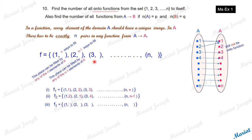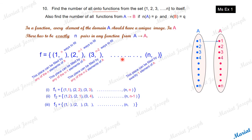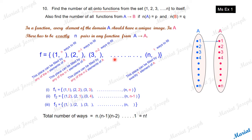Likewise, for the third element, two images are already used, so we are left with n−2 options. It keeps reducing. The last pair has exactly one option — the one remaining element. So filling up these n pairs takes n ways, then n−1, then n−2, and so on down to 1. By the multiplication principle, the total number of arrangements is n × (n−1) × (n−2) × ... × 1, which is n factorial. Therefore, the total number of onto functions from set A to set A is n factorial.